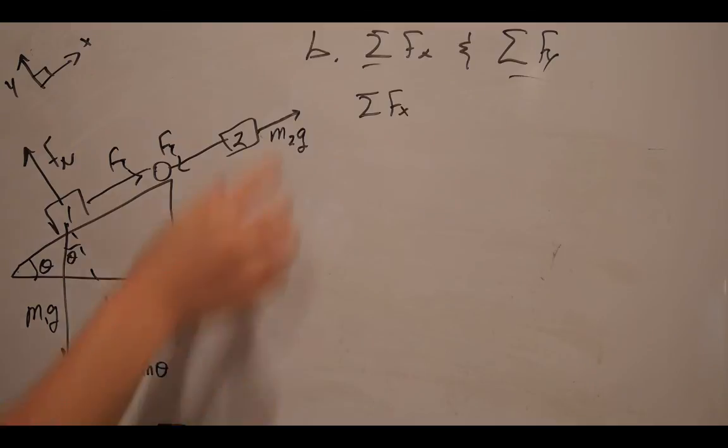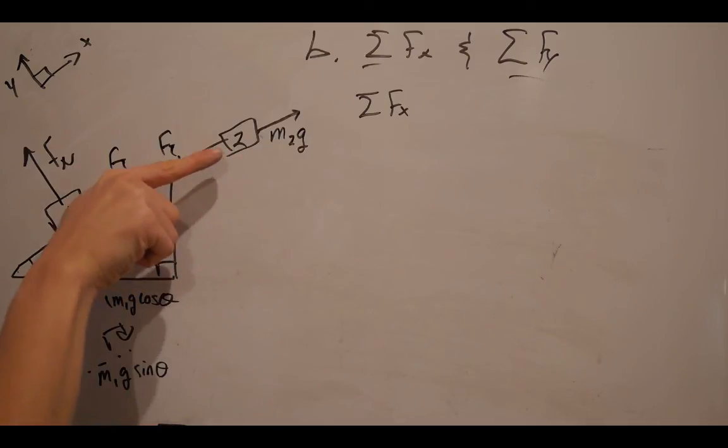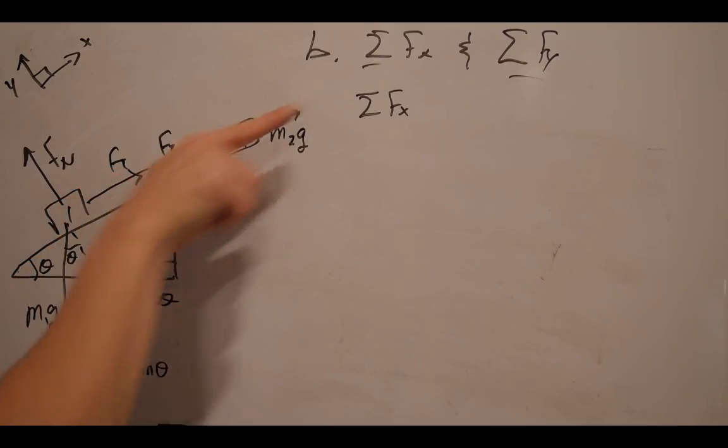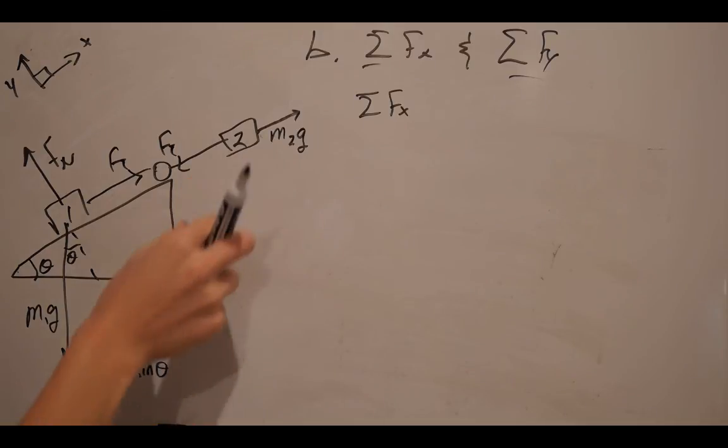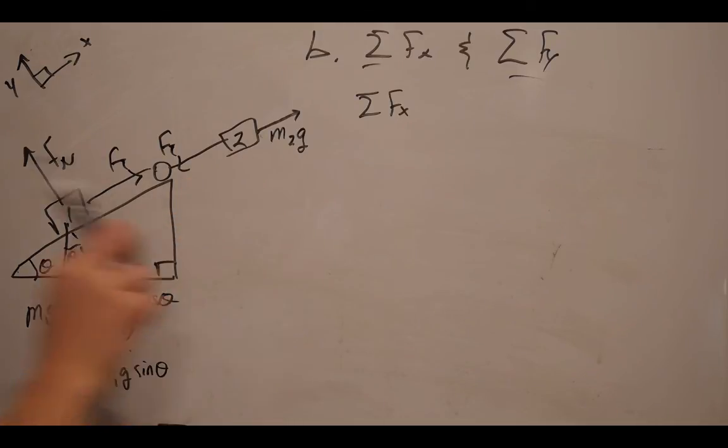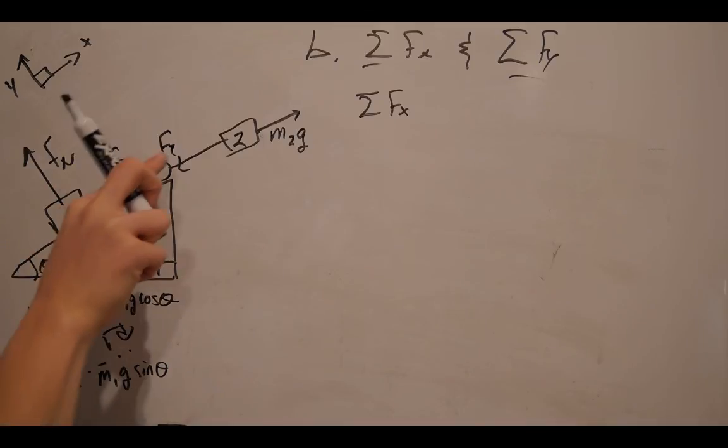However, if we use our imagination and we adjust mass 2 so that the line is straight, we can imagine that mass 2 is sliding that way, making mass 1 also slide in that same direction. So in reality, mass 2 is moving down and mass 1 is sliding up.